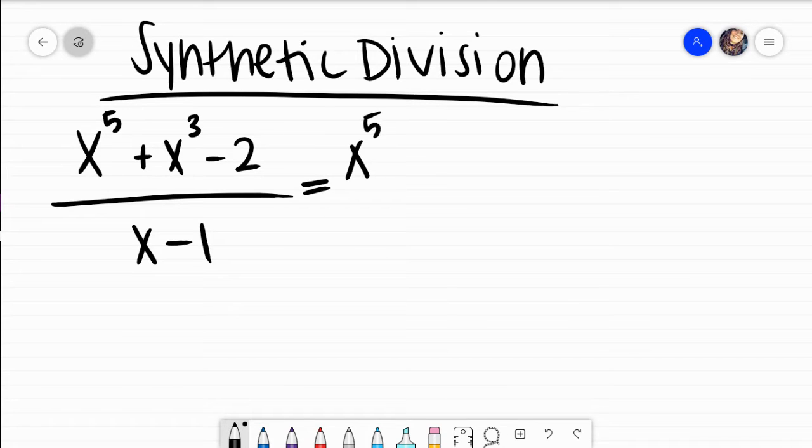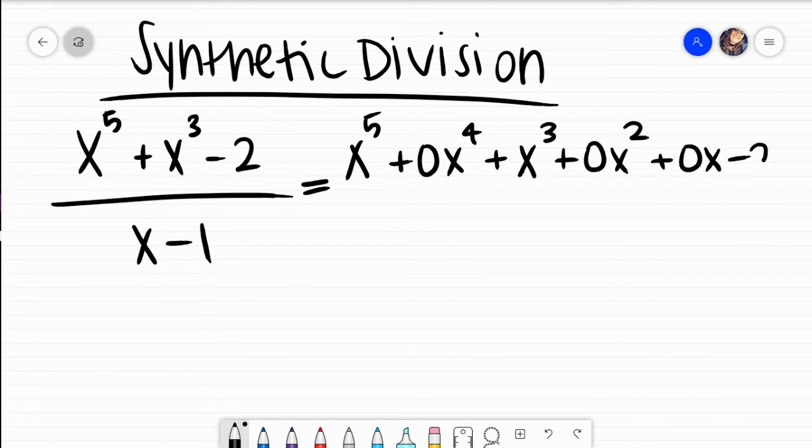I would have x to the fifth. What you do is we're going to add a zero x to the fourth. I actually do have x cubed. I do not have x squared. And then I also do not have x to the first power. I do have that constant right there at the end. And then right there, I have my x minus 1.